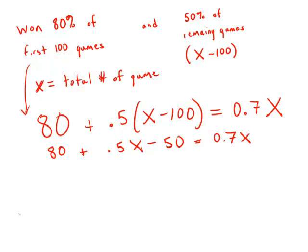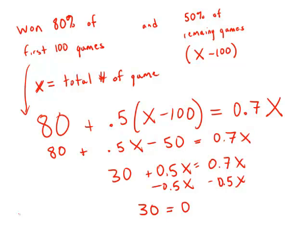I subtract the 80 and the 50, I get 30 plus 0.5X equals 0.7X. Subtract 0.5 from each side. We get 30 equals 0.2X. And of course, 0.2 is the same as a fifth. So I'm just going to cancel that by multiplying both sides by 5. 150 equals X. And this is answer choice D.